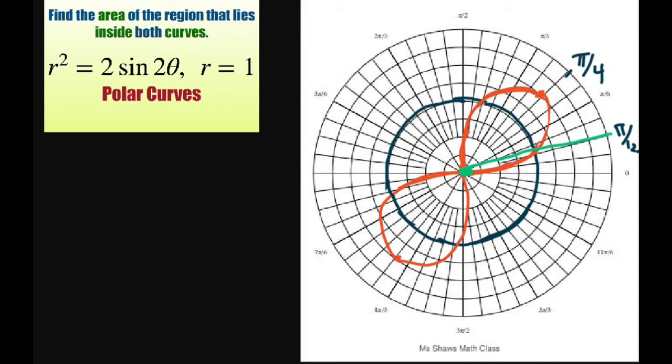To find the intersection here, right there, let me do a different color. So right here, you're going to set these equal to each other.